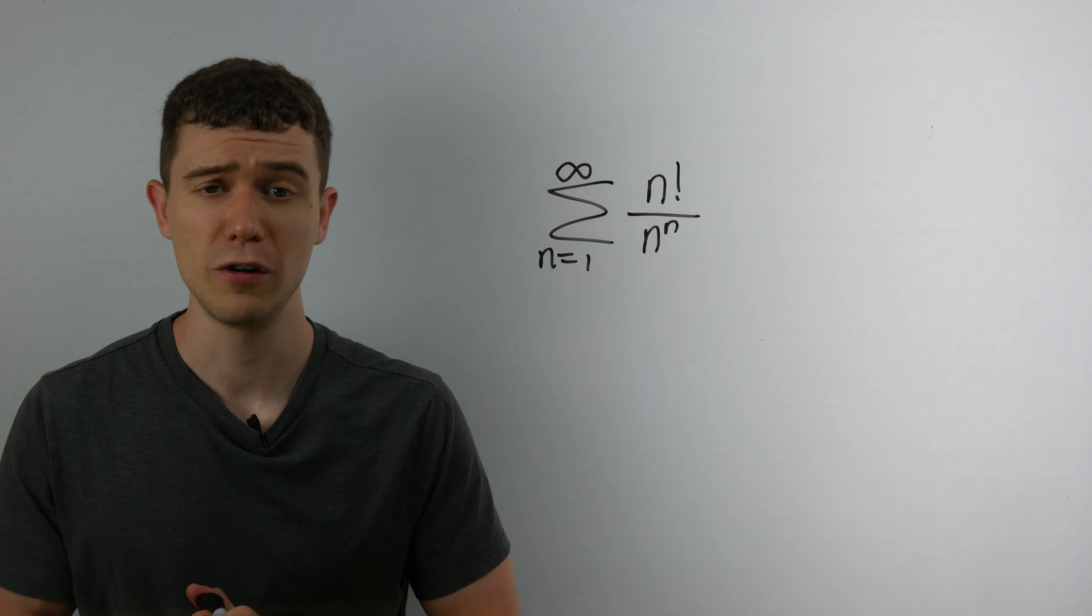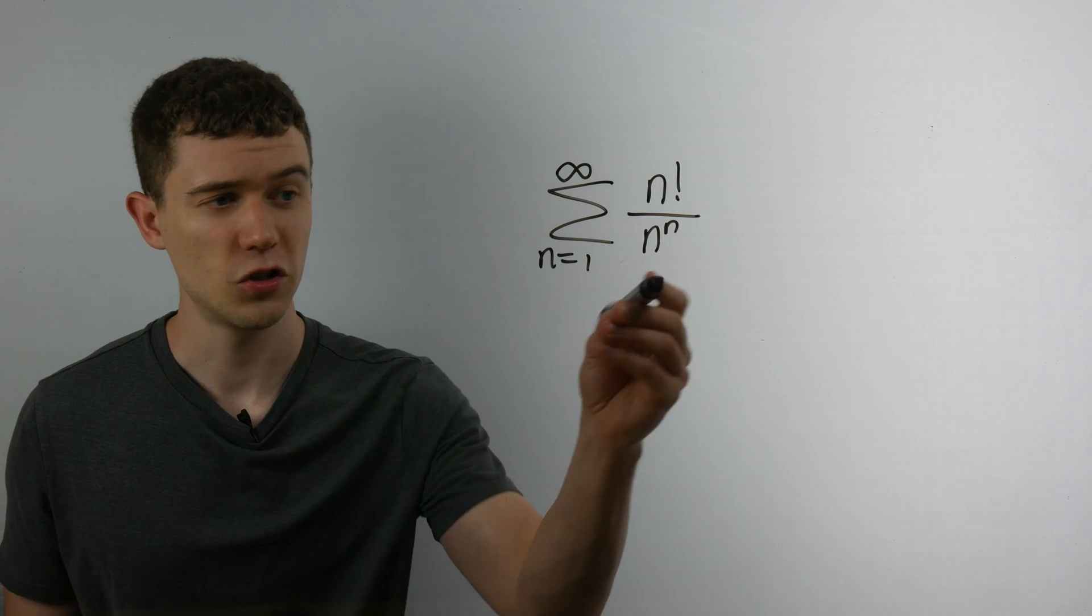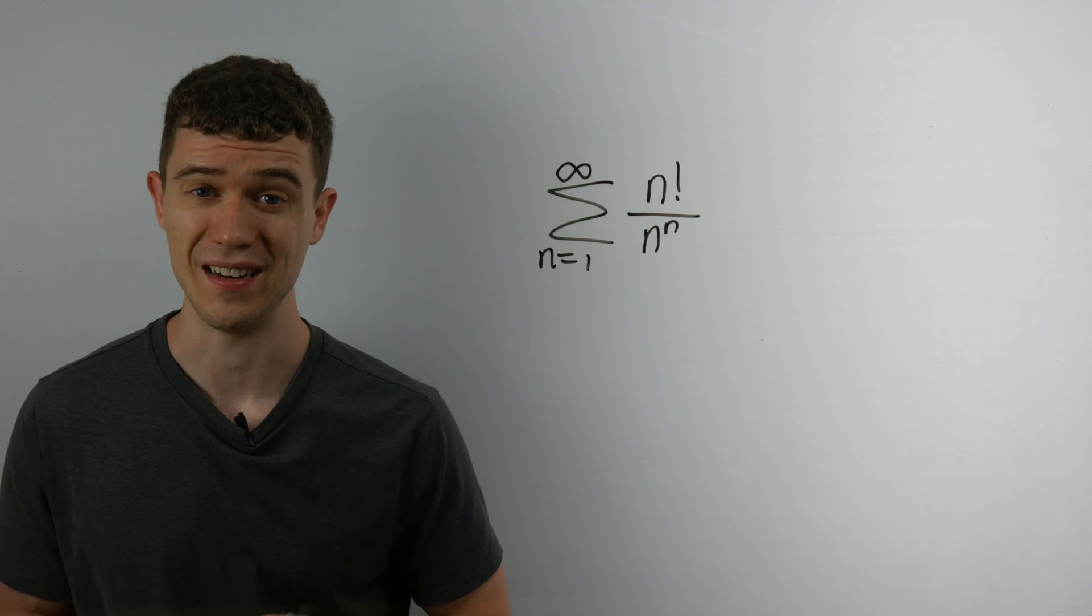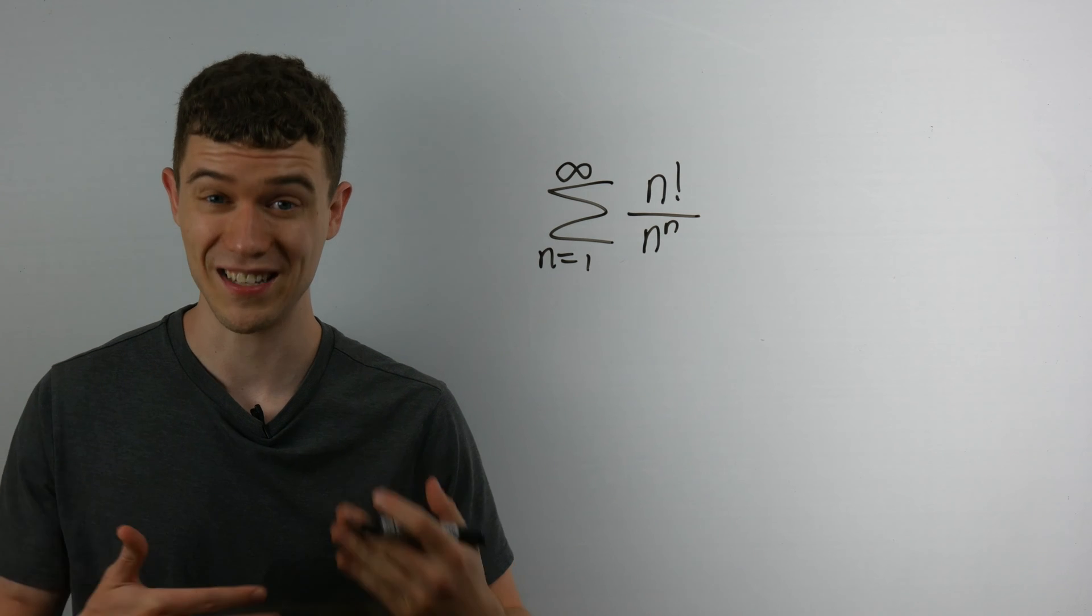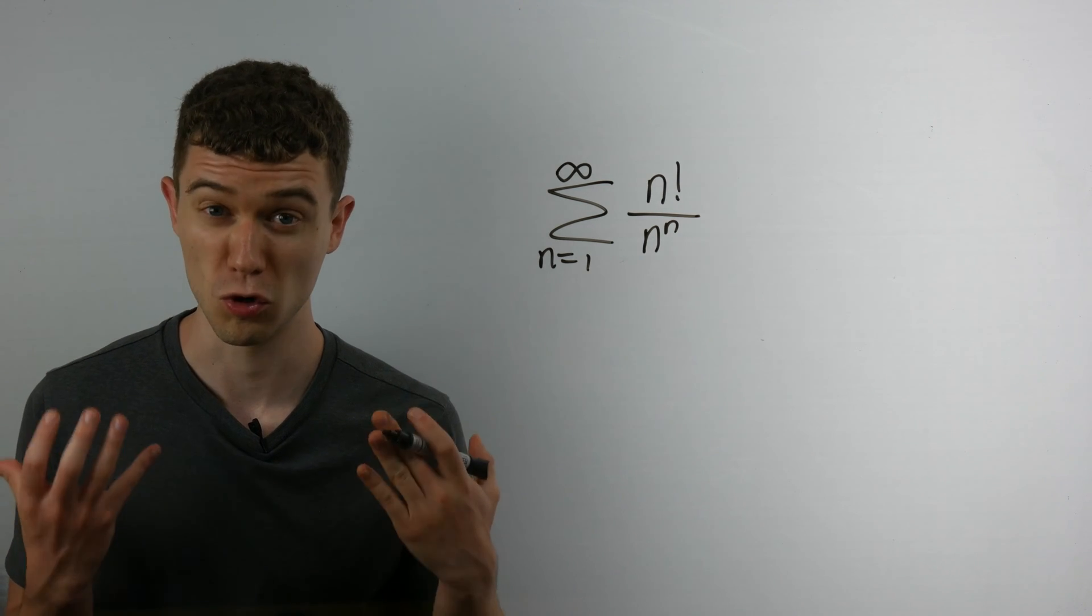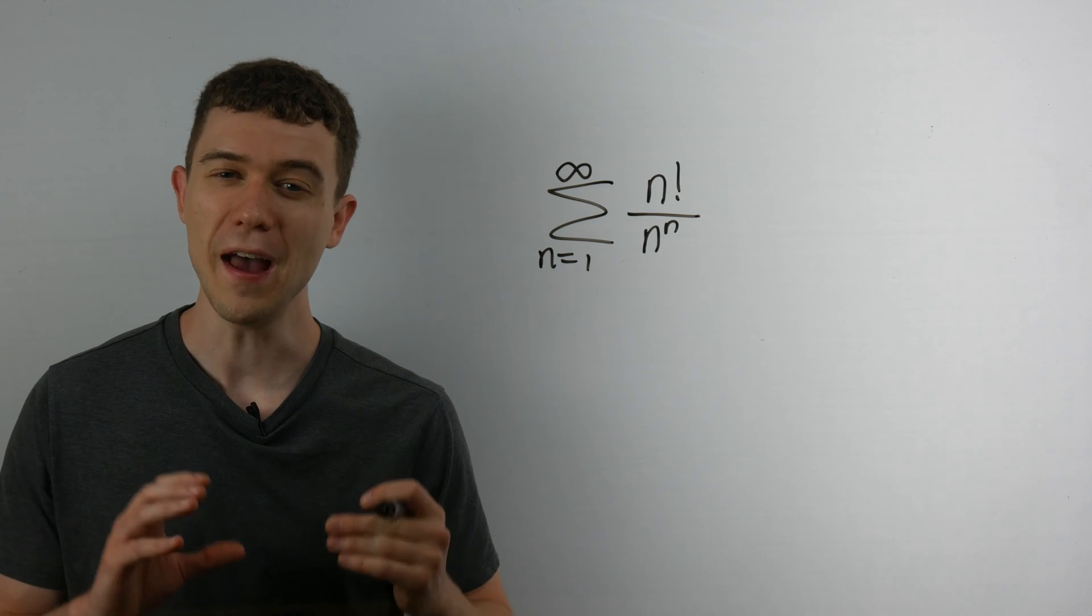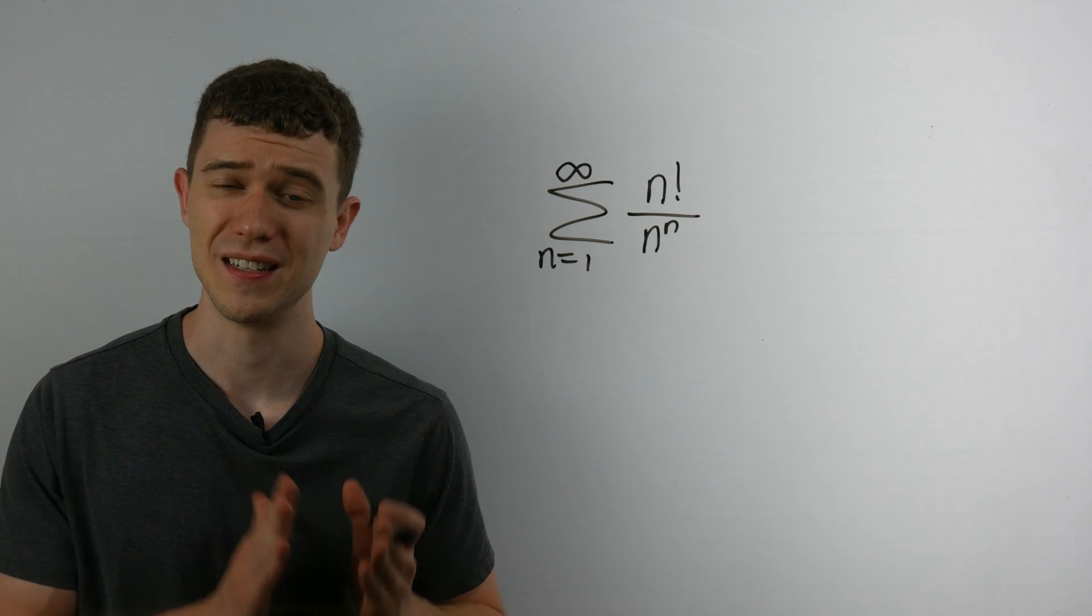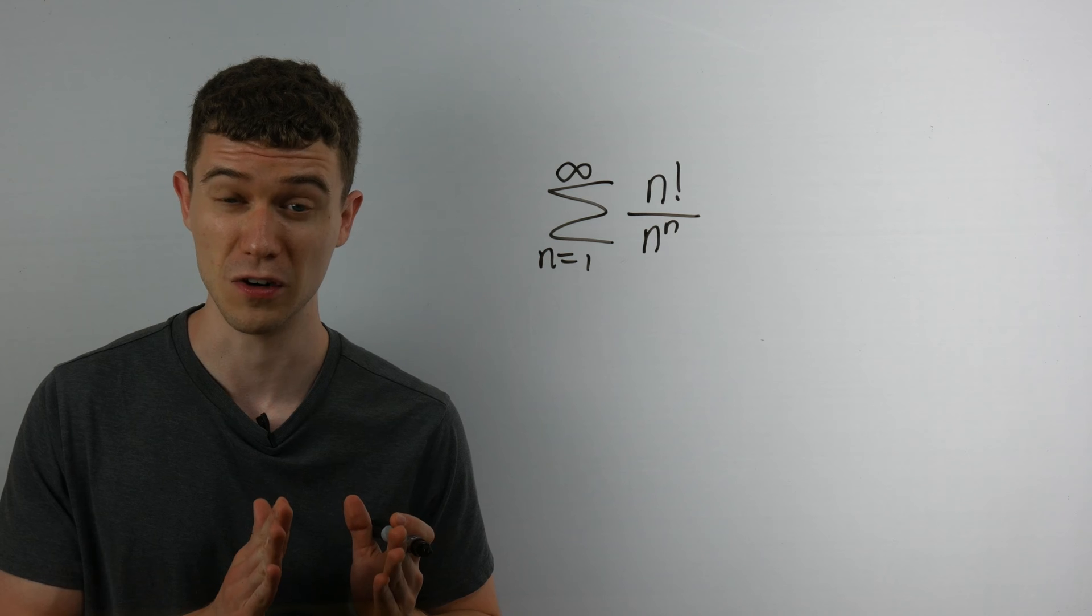So you might have a little bit of intuition about this. Certainly n to the power of n is a much faster sequence than n factorial. It grows much more quickly. And so that might give you an intuition to say that this series is going to converge. And it is.